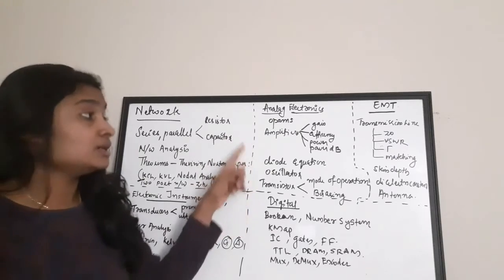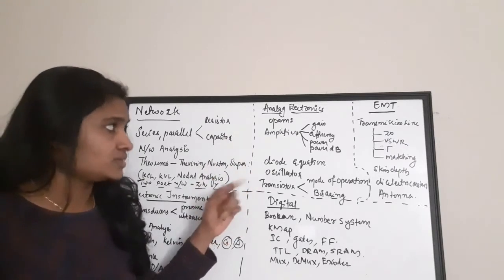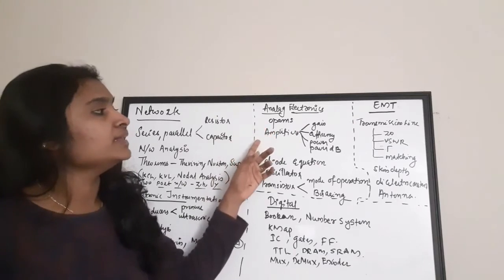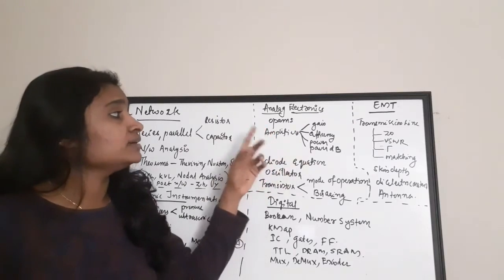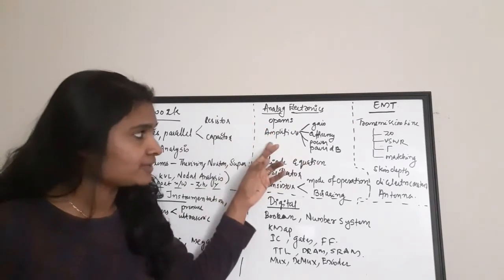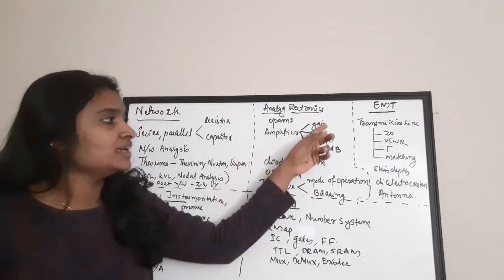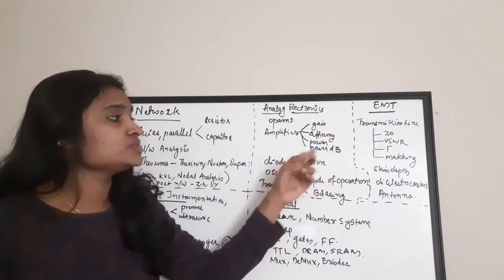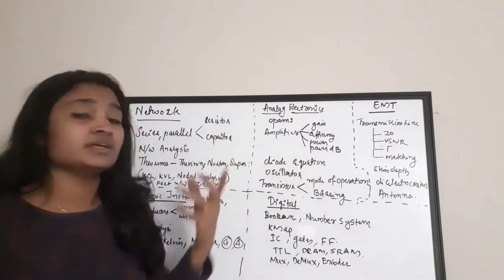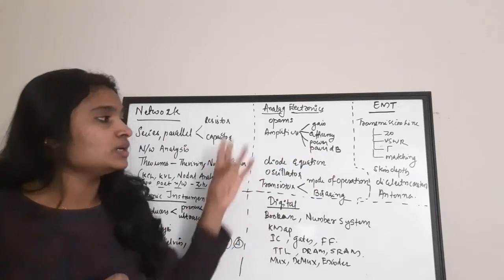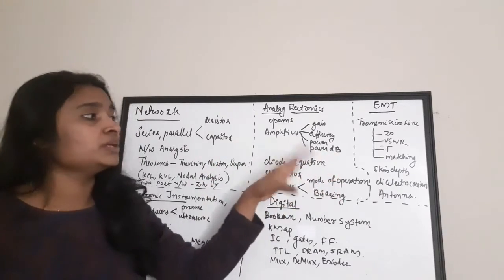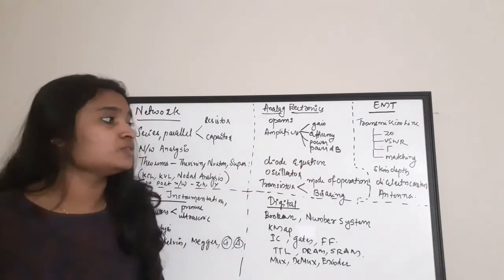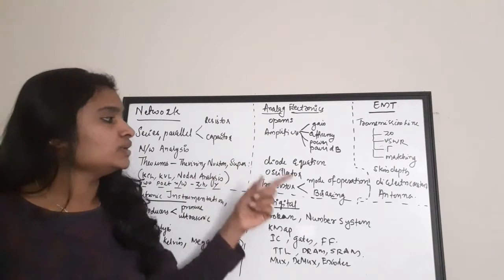Next comes Analog Electronics. You have to mainly concentrate on op-amps, then amplifiers — where you need to focus on gain, efficiency, and power. There are questions on power conversion to dB, where they give you ratios to convert into dB or vice versa.